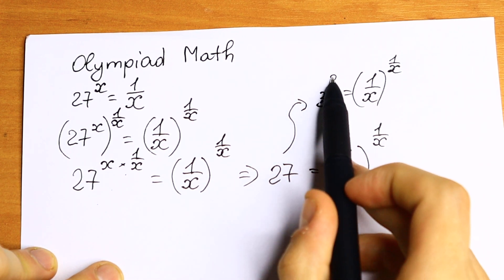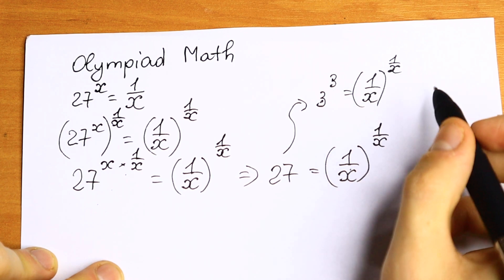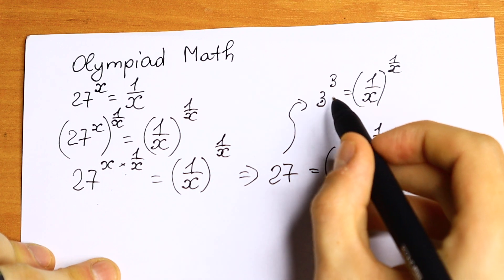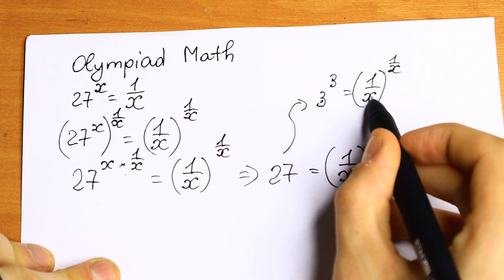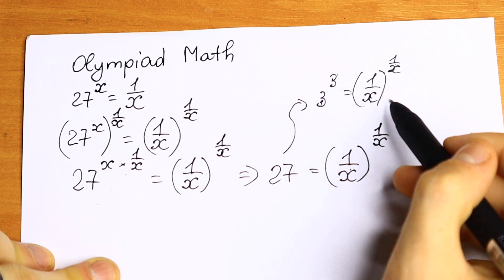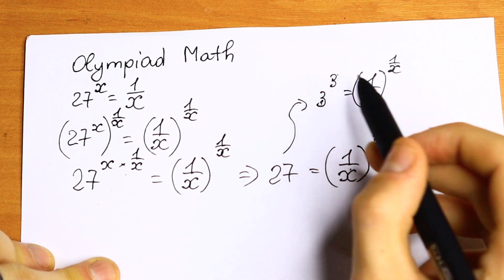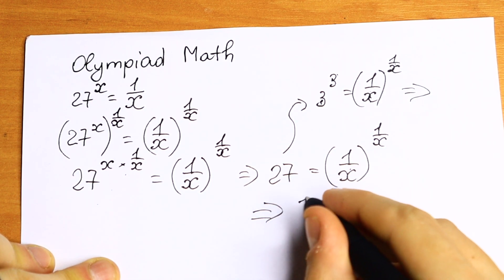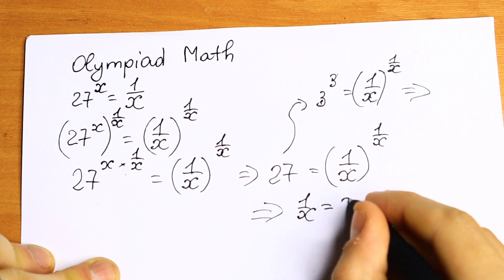And take a look what we will have. We have same base, same exponent, and same base, same exponent as well. So the one way, one and only way that this equation works is when base equal to base on the left and exponent equal to exponent on the left. But this both is the same. So right here we have only one equation, that 1 over x equal to 3.